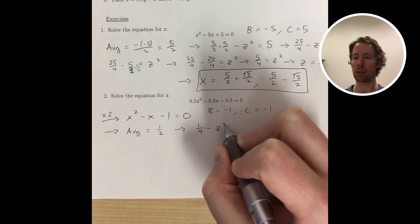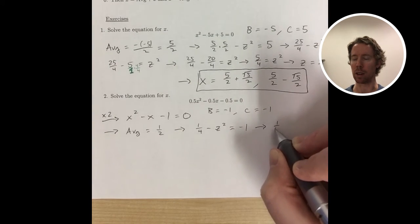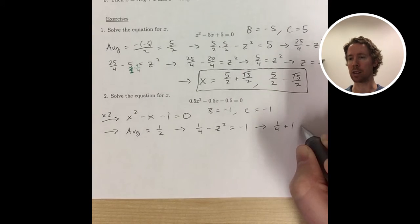And then we go back to our equation. Average squared minus z squared equals c.